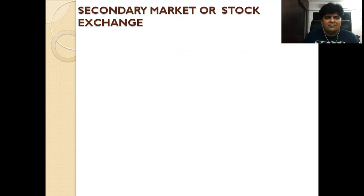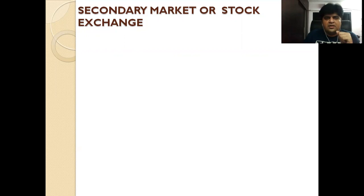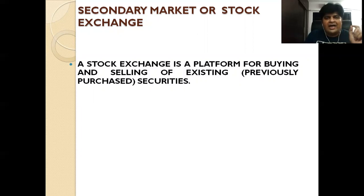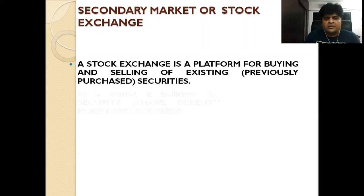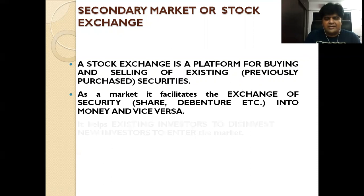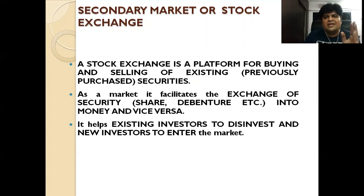...and understanding the various methods, now we are understanding the functions of stock exchange, or you can say the secondary market itself. First of all we are going to understand the meaning of secondary market. Stock exchange is a platform for buying and selling of existing securities. Existing securities are those which were previously purchased. Primary market is where you first issue the security. Secondary market is that specific market where those securities are actually bought and sold. As a market, it facilitates exchange of securities — that is shares and debentures — into money and vice versa.